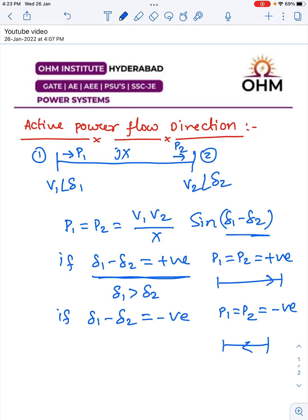The final conclusions are: First, active power flow always depends on the load angle difference between the buses. Second, active power always flows from the higher load angle bus to the lower load angle bus.